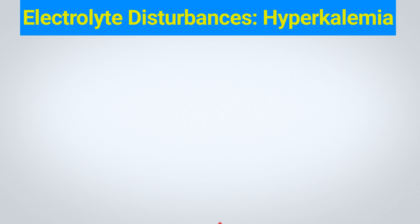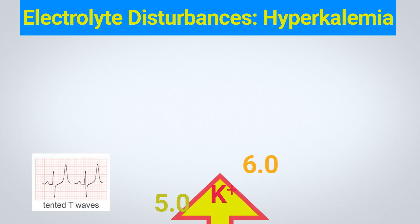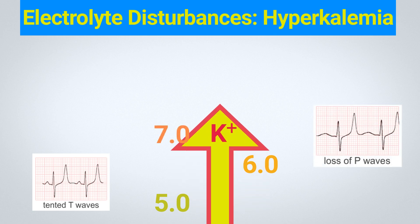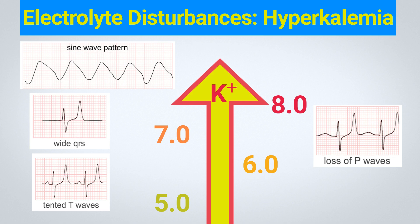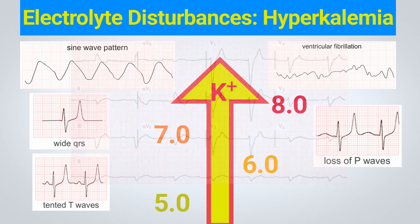Hyperkalemia can be lethal due to its cardiac toxicity. Progressive hyperkalemia produces a unique sequence of ECG changes affecting depolarization — the QRS complex — and repolarization, with widening QRS complexes. As serum potassium concentration rises further, QRS complexes continue to widen, eventually leading to a large undulating sine wave pattern, asystole, and cardiac arrest. Recognizing early signs of T wave peaking is crucial for potentially life-saving interventions. Hyperkalemia is commonly seen in kidney failure, where potassium excretion is reduced.